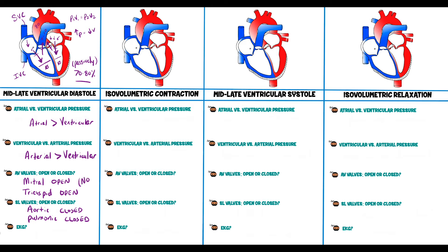If there is any sound at this stage, that would indicate pathology. The final important point for this phase: the atria must depolarize in order to contract and push the remaining 20 to 30 percent of blood into the ventricles. That atrial depolarization shows up on the EKG as the P wave, which is representative of the later end of ventricular diastole.